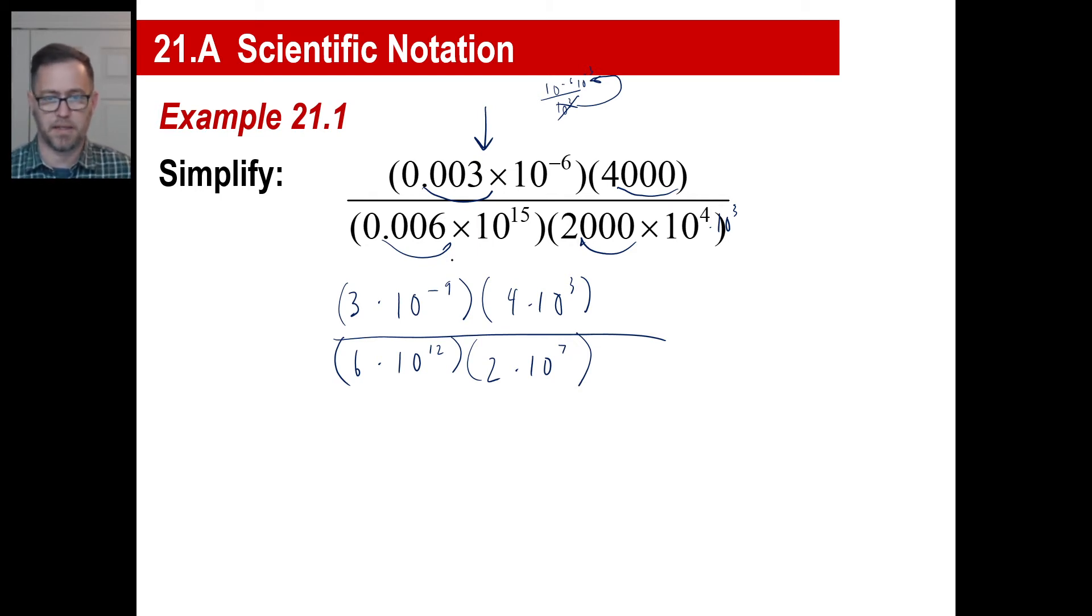Now you probably see, I'm gonna go ahead and do this the long way, and then you can skip a step or two if you need to, but three times four is 12. Down here, six times two is 12. We can write those. Up top, we have 10 to the negative ninth times 10 to the positive third. Well, negative nine plus three is negative six. Down here, we have 12 and we have seven. That's gonna be 10 to the 19th. Now we can go like this. 12 divided by 12, one. 10 to the negative six divided by 10 to the 19th, we're subtracting. Or if you wanna think of it this way, you can mash this up here and turn it into 10 to the negative 19th. Well, negative six minus 19 is negative 25.